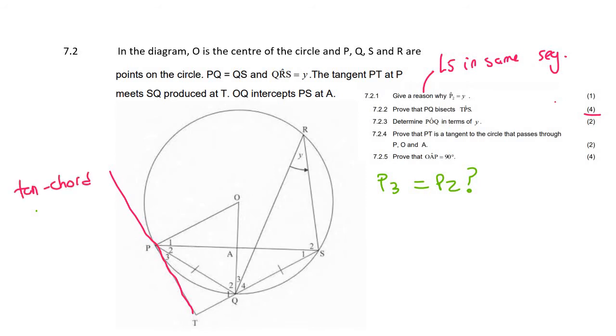Tan chord theorem. And the tan chord theorem tells us that if you have a tangent and a chord, so here's the chord, then what you do is you look at the angle in between, which is P3, and then you try to see where does that chord go. Well, that chord goes over here. So I can definitely say that P3 is the same as angle S1, and that's just the tan chord theorem.